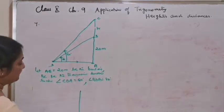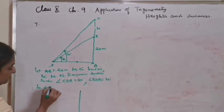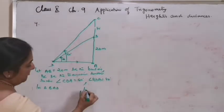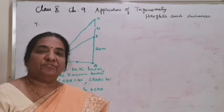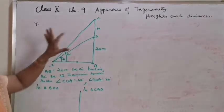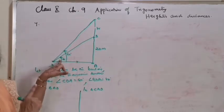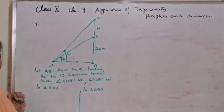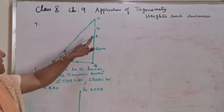Let BC be the transmission tower such that angle CDA is equal to 60 degree and angle BDA is equal to 45 degree. You need to get the height of BC. After drawing the picture and giving the introduction, identify the two right triangles. Triangle BAD is the first triangle and triangle CAD is the next triangle.